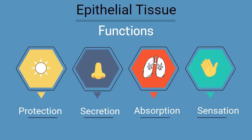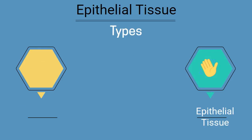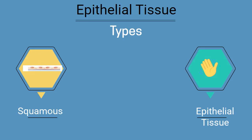Epithelial tissues are divided into several different types and are classified by both their shape and number. First up you have Squamous. Squamous cells are like pancakes — their width is greater than their height. You will find these in the lungs and blood vessels.